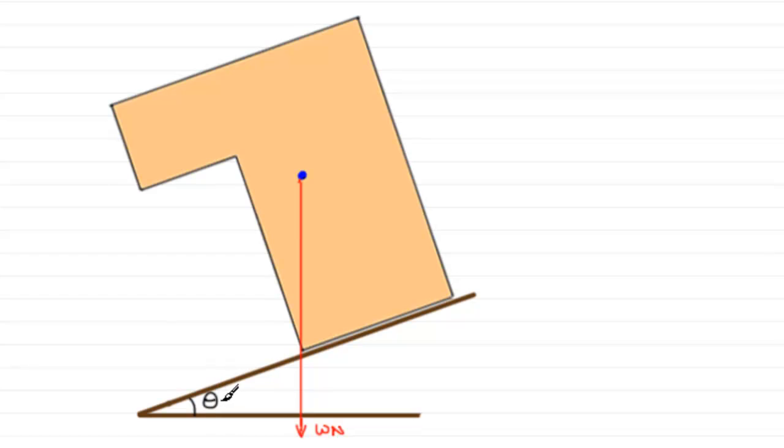Well, let's call it theta. And if you draw a line from your centre of mass perpendicular to the plane, you're going to get a right-angled triangle. And this angle theta appears up here by basic geometry.